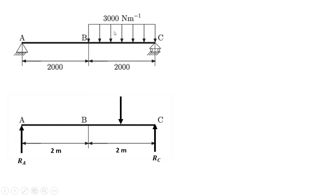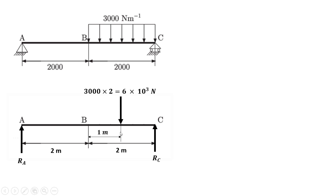Since it is a rectangular distribution, we will convert this uniformly distributed load into a point load. The UDL is 3000 Newton per meter, so for a 2-meter length the total load is 3000 into 2, which equals 6000 Newton or 6 × 10³ Newton. This point load acts at the center of the 2-meter length, that is 1 meter from B.